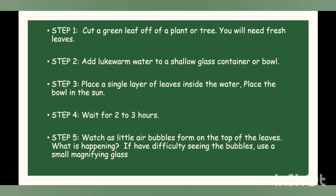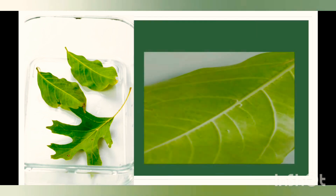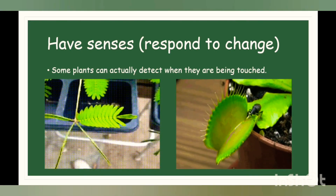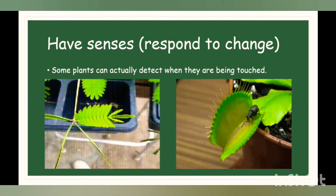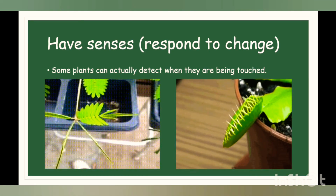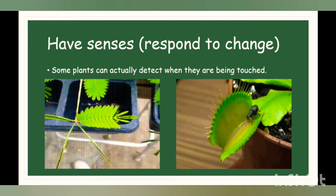You can do this experiment at home as well. Cut a green leaf off the plant, add lukewarm warm water to a shallow glass container, place the leaves in a single layer, then place the bowl in sun. Wait two to three hours and you can watch little air bubbles from the top of the leaves — that is how you can witness breathing in plants. Some plants can actually detect when they are being touched, or they respond to touch quite quickly, as you can see in the small videos below.